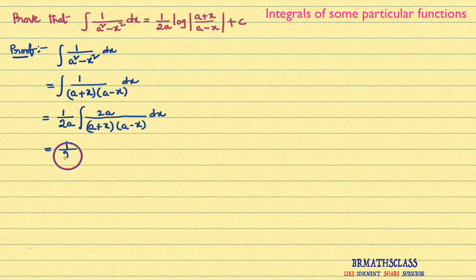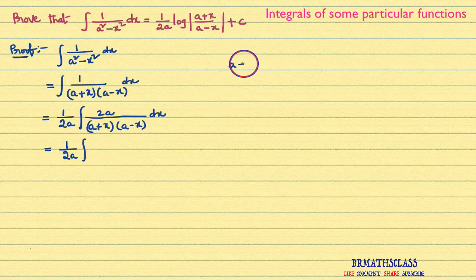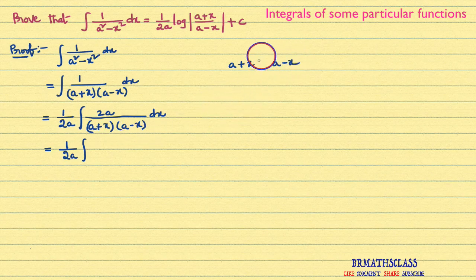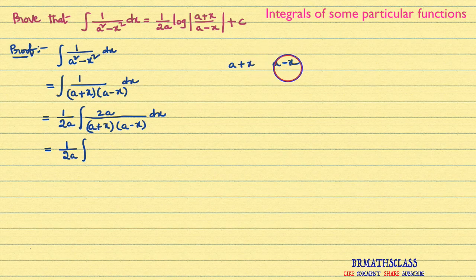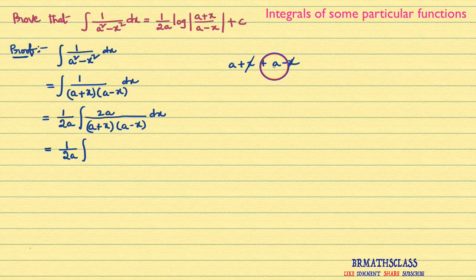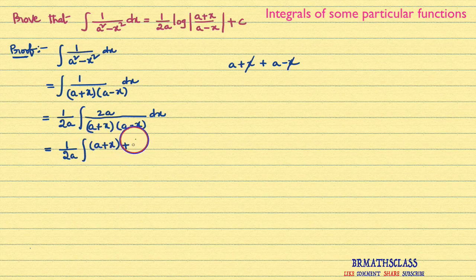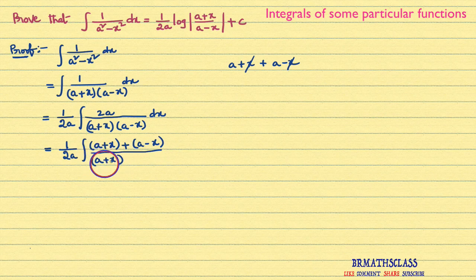That equals 1 by 2a into integral of — here I am going to follow the trick. What are there in the denominator? One is a plus x, another one is a minus x. You check to add or subtract these two numbers such that you will get 2a. When I write plus, plus x and minus x cancel, and a plus a is 2a. So 2a can be written as a plus x plus a minus x. This is the trick. Divided by a plus x into a minus x dx.